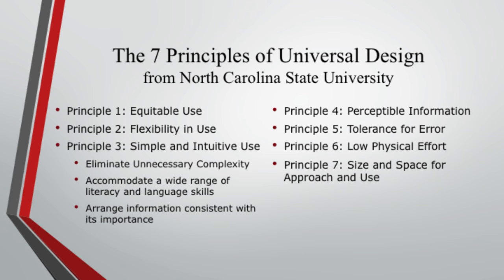North Carolina State University developed seven principles of universal design, applicable to architecture but also to curriculum design. Principle one, equitable use, is about not stigmatizing or segregating the student — as we talked about with the note taker forms, they are part of the class. Principle two, flexibility in use, means providing a wide variety of methods — like scissors that can be used by both right- and left-handed people. Principle three involves eliminating unnecessary complexity, accommodating a wide range of literacy and language skills, and arranging information consistent with its importance.